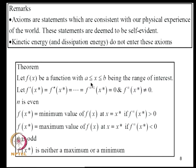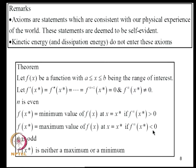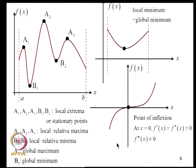Let F be a function of X lying between A and B, and let F', F'', ..., F^(N-1) at X* all be zero. If N is even and F^(N)(X*) > 0, then F has a minimum at X*; if F^(N)(X*) < 0, it has a maximum. If N is odd, F is neither a maximum nor a minimum. The superscript N denotes the N-th order derivative of F as a function of a scalar variable.